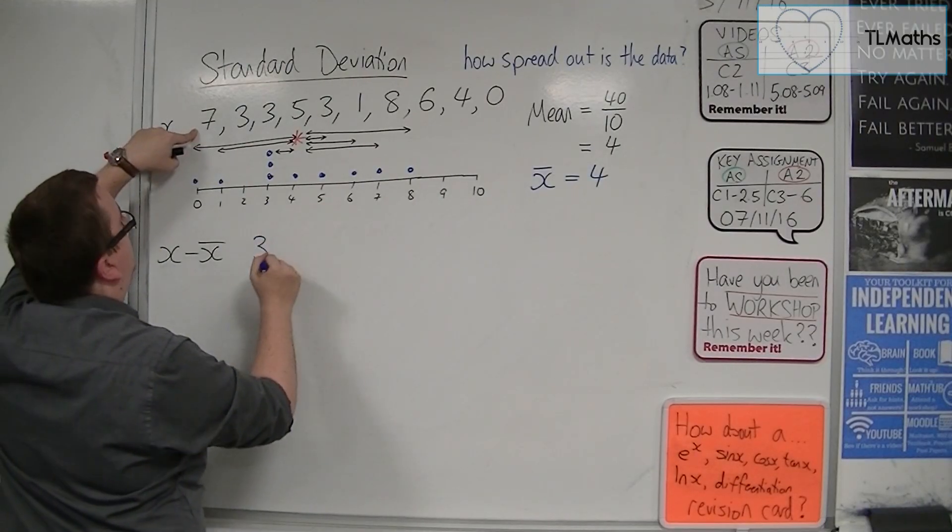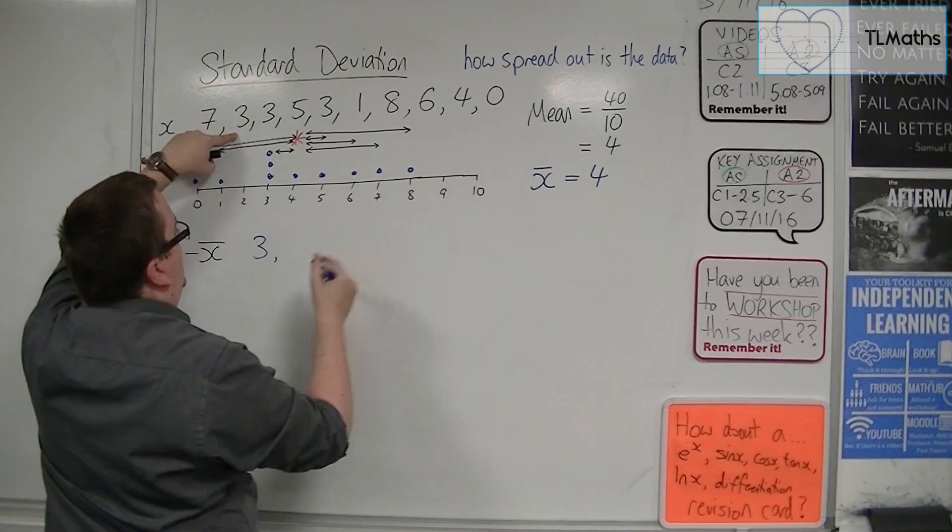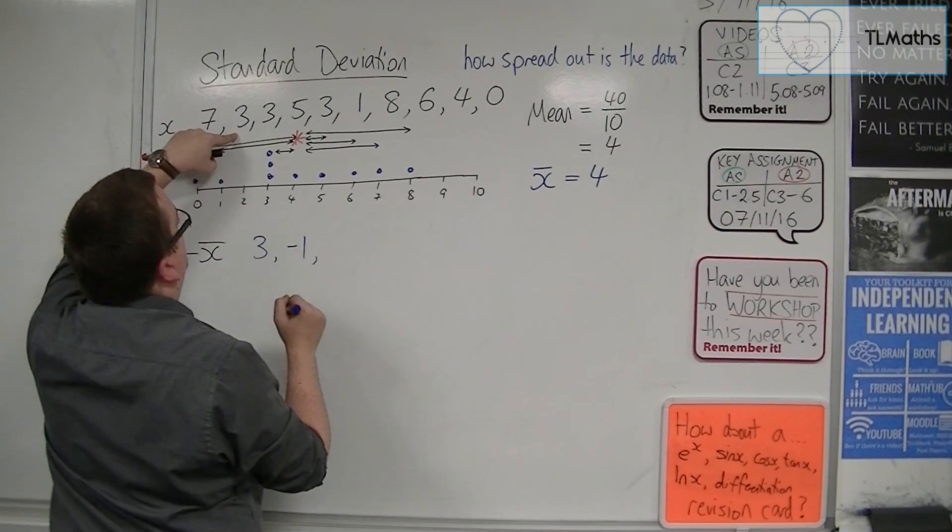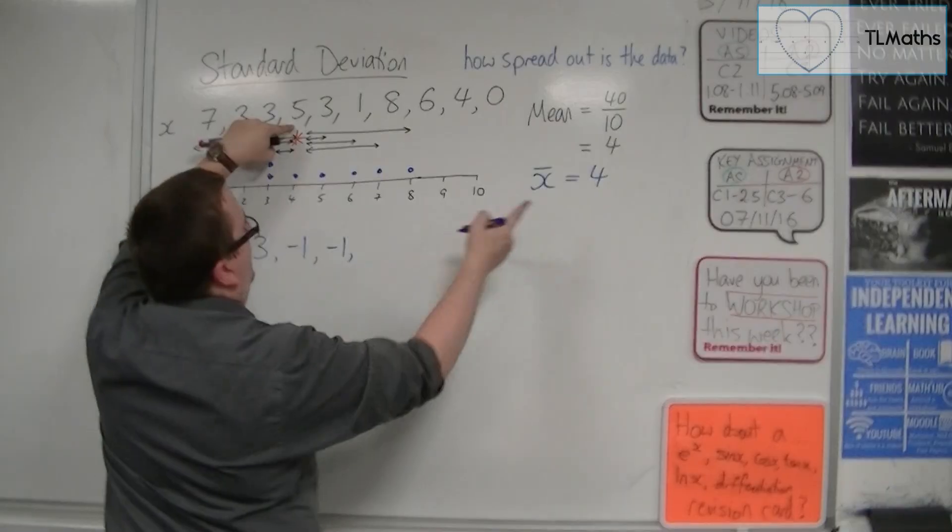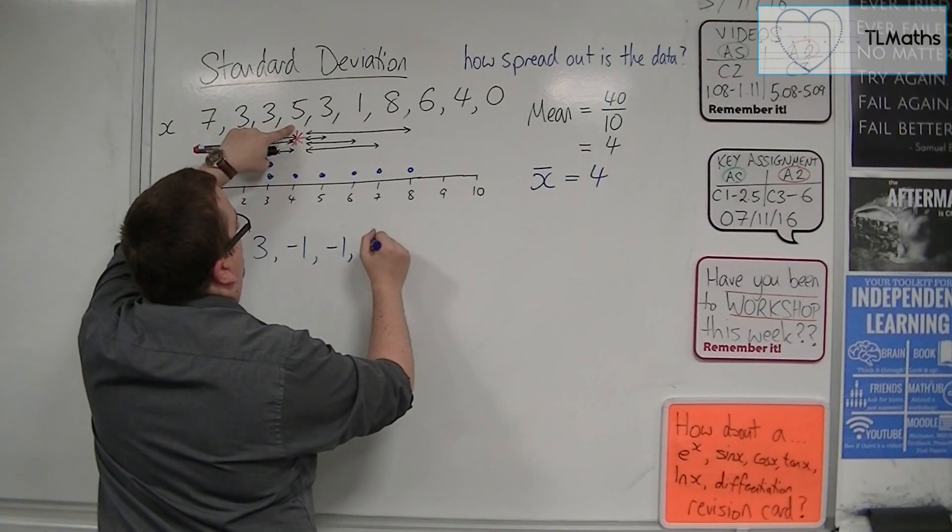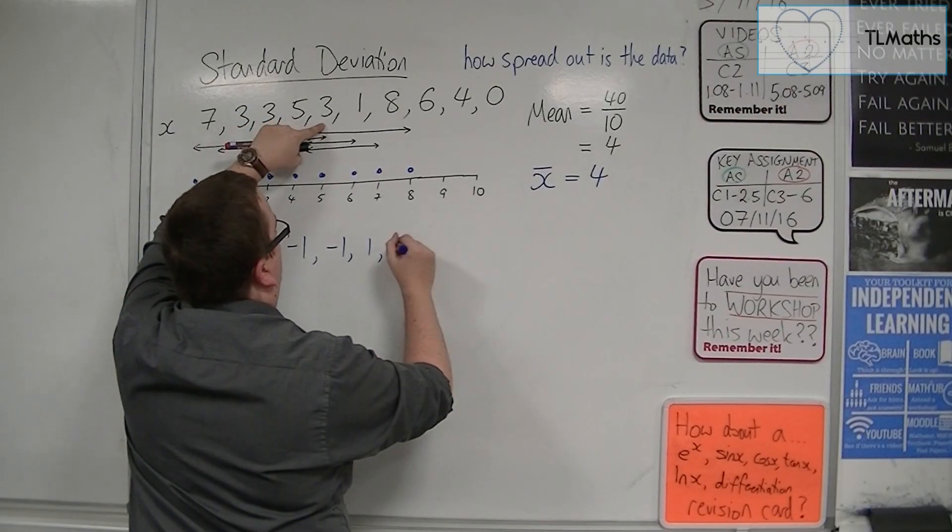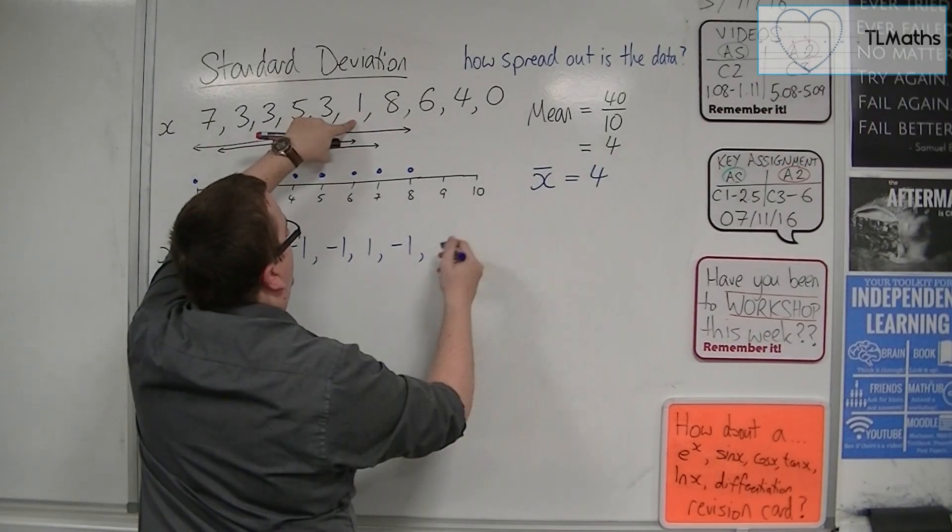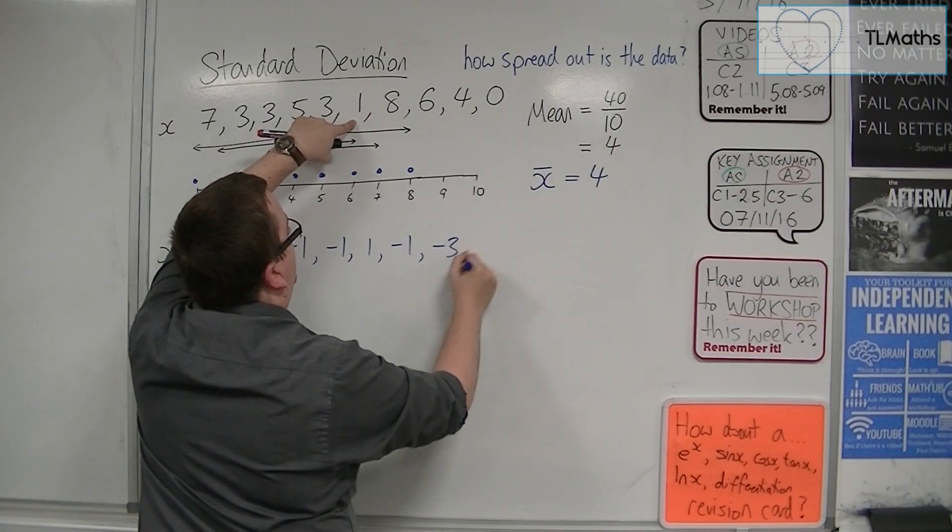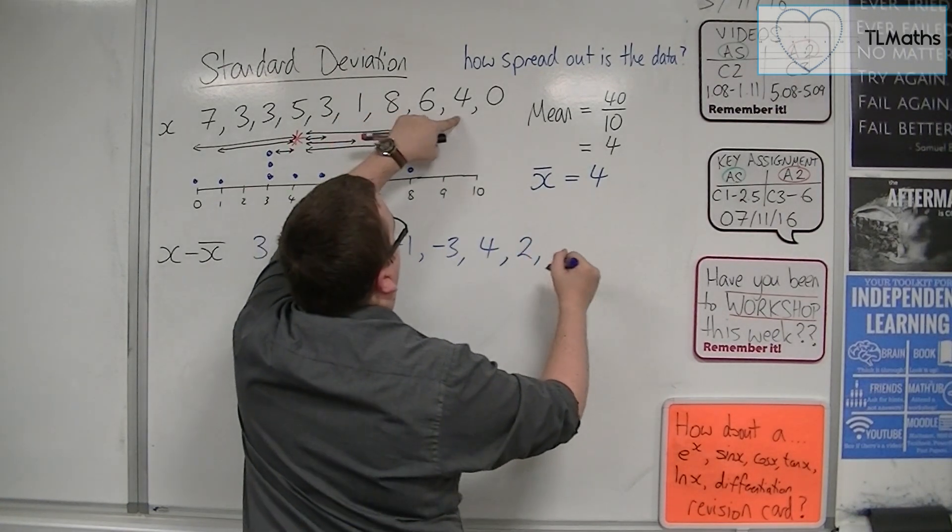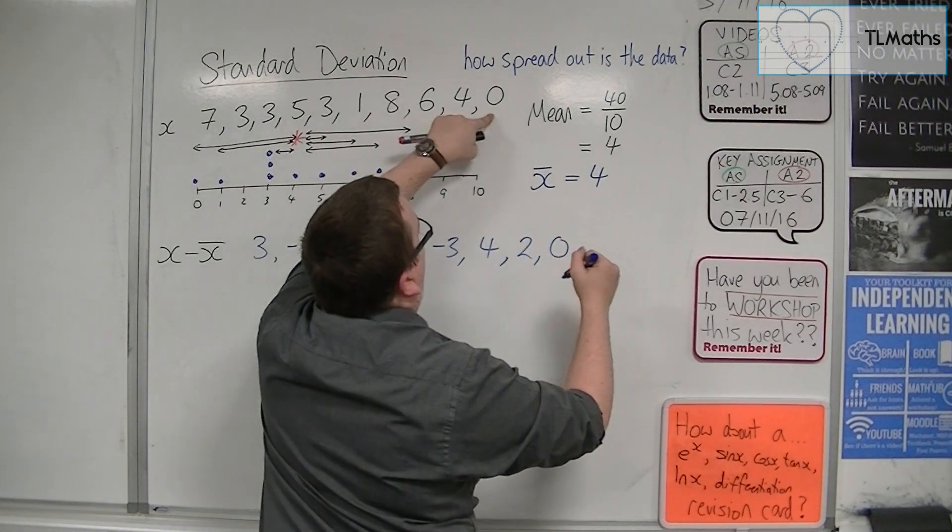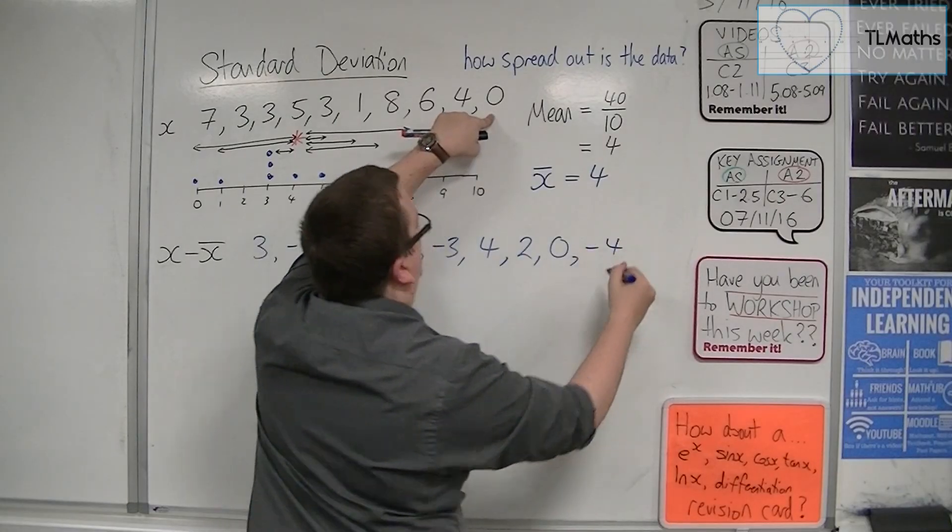If I do that, I'm going to have 7 take away 4, that's 3. Then I've got 3 take away 4, so minus 1. 3 take away 4 is also minus 1. 5 take away 4 is 1. 3 take away 4 is minus 1. 1 take away 4 is minus 3. 8 take away 4 is 4. 6 take away 4 is 2. 4 take away 4 is 0. And 0 take away 4 is minus 4.